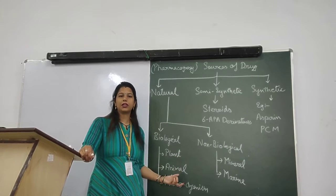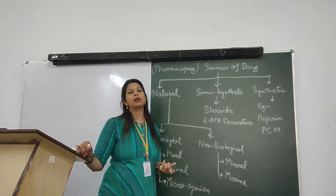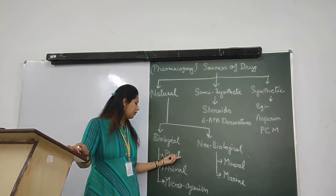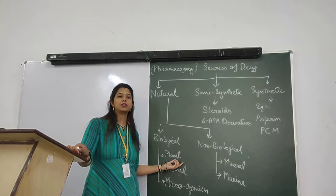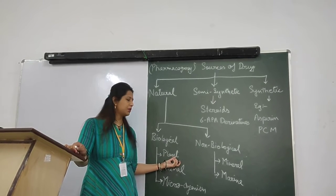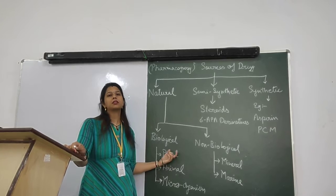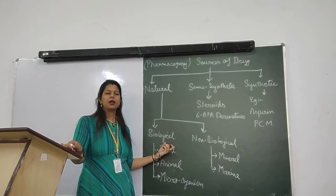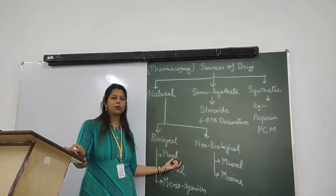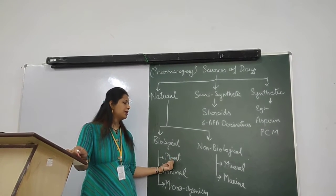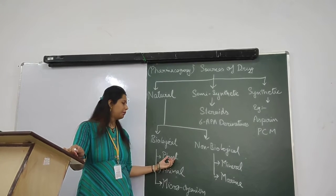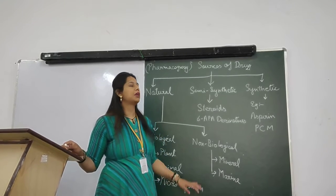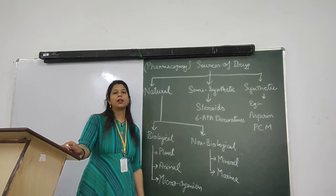Fruits are also used as medicinal parts of plants. Then flowers — hibiscus and rose petals are used, and marigold is also used as a plant flower part. Then after flowering, buds are also used — for example, saffron and clove.